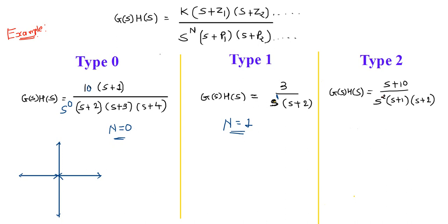For the type 2 system, the loop transfer function G(S)H(S) equals (S+10) in the numerator and S^2(S+1)(S+2) in the denominator. By comparing S^2 with S^N, we can say N equals 2, meaning the number of poles at the origin is 2. So this system is a type 2 system because the number of poles at the origin is 2 and the power of S is 2.